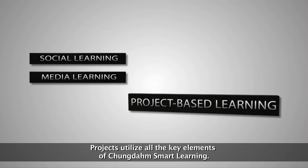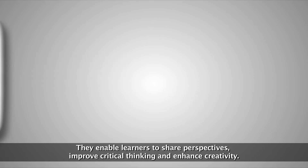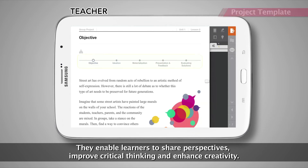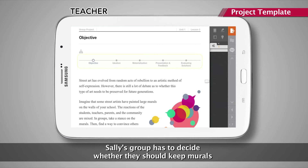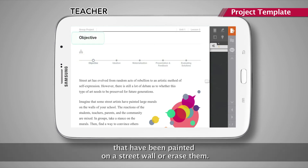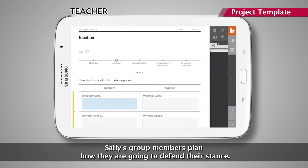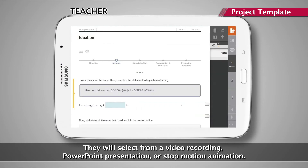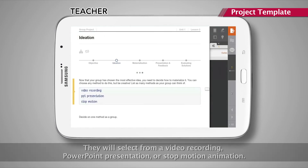Projects utilize all the key elements of Cheongdam Smart Learning. They enable learners to share perspectives, improve critical thinking, and enhance creativity. For the Art in the Alleys lesson, Sally's group has to decide whether they should keep murals painted on a street wall or erase them. As shown in the project template, Sally's group members plan how they are going to defend their stance, selecting from a video recording, PowerPoint presentation, or stop-motion animation.